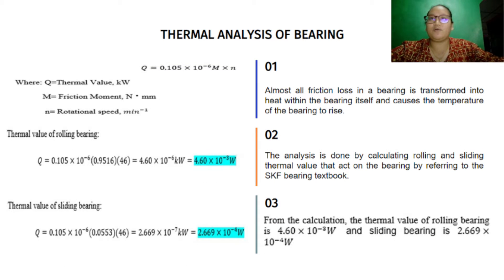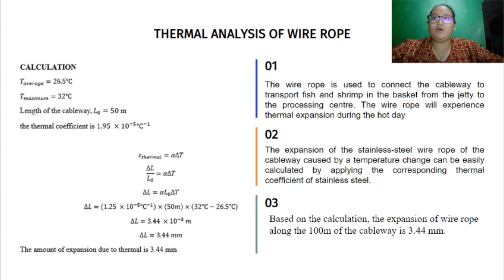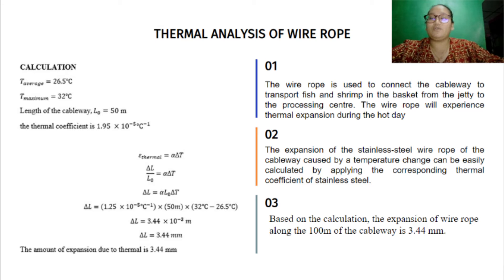Almost all friction loss in the bearing is transformed into heat within the bearing itself, causing the bearing temperature to rise. The thermal value of rolling bearing is 4.6×10⁻³ W and sliding bearing is 2.669×10⁻⁴ W. The wire rope used at the cableway system will experience thermal expansion on hot days. Applying the thermal coefficient of stainless steel, the expansion of the wire rope along the 100-meter cableway is equal to 3.44 mm.